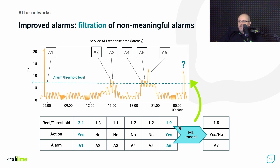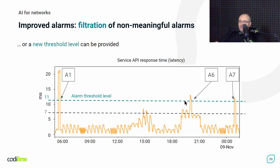This is one way we could use machine learning techniques. Another way is to analyze such data and evaluate the right level of thresholds, separating important from non-important alerts. For instance, we can deduce that the alert threshold should be set to 11, so that we will receive only three important alerts.